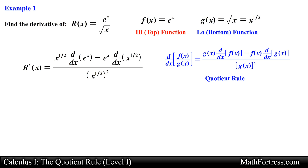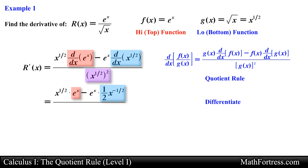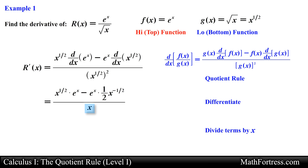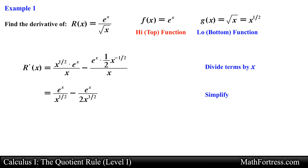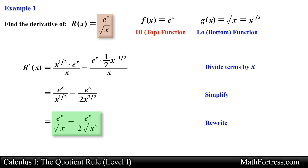Next we find the derivative of e to the x and x to the one half, and simplify the denominator. We can rewrite the expression by dividing both terms in the numerator by the denominator, and rewrite fractional powers back into radical expressions, resulting in e to the x over the square root of x minus e to the x over 2 times the square root of x cubed. This is the same answer obtained in the product rule video — note it might be easier to use the product rule for functions that could be rewritten as a product.